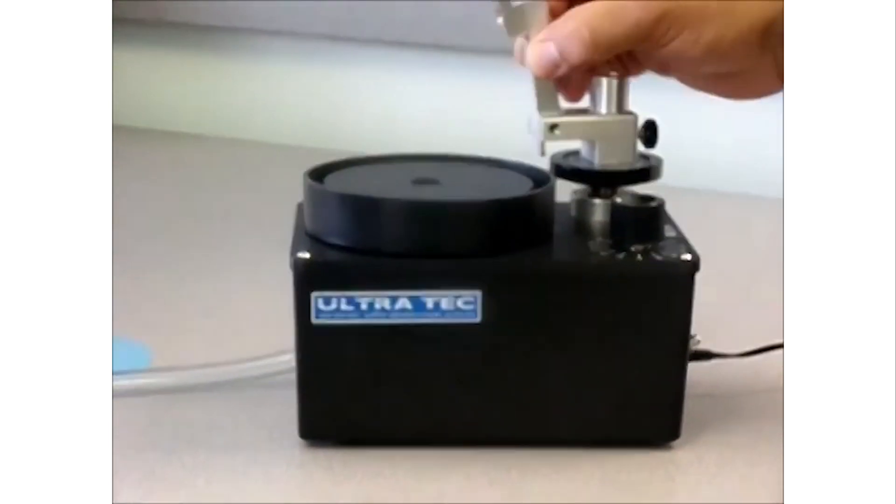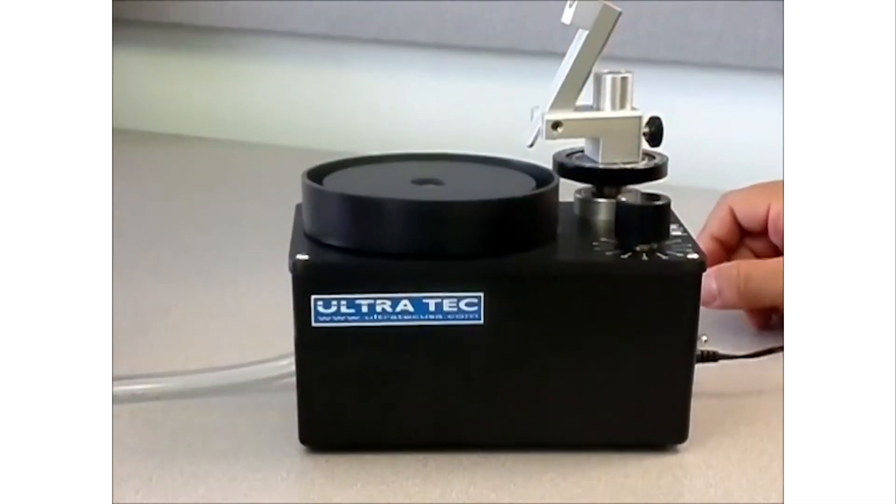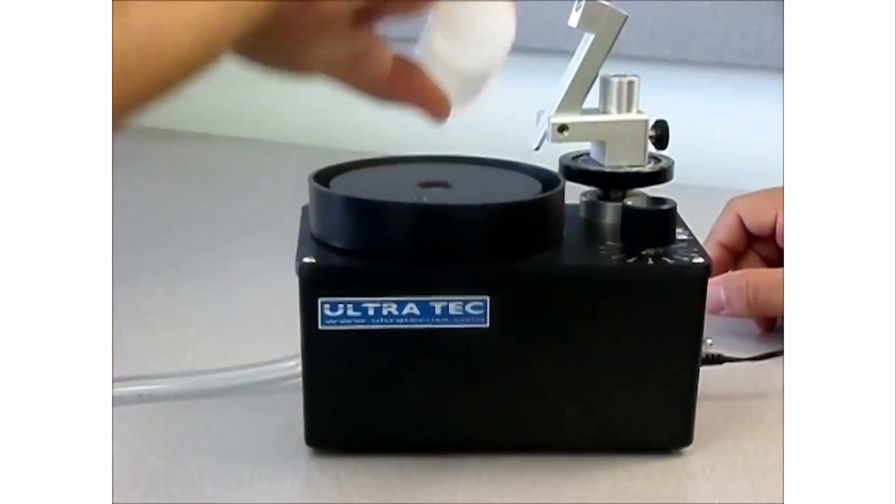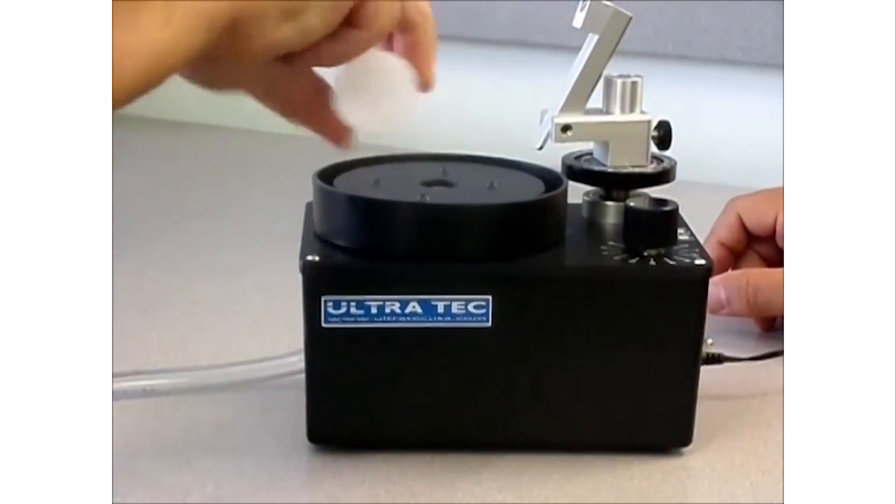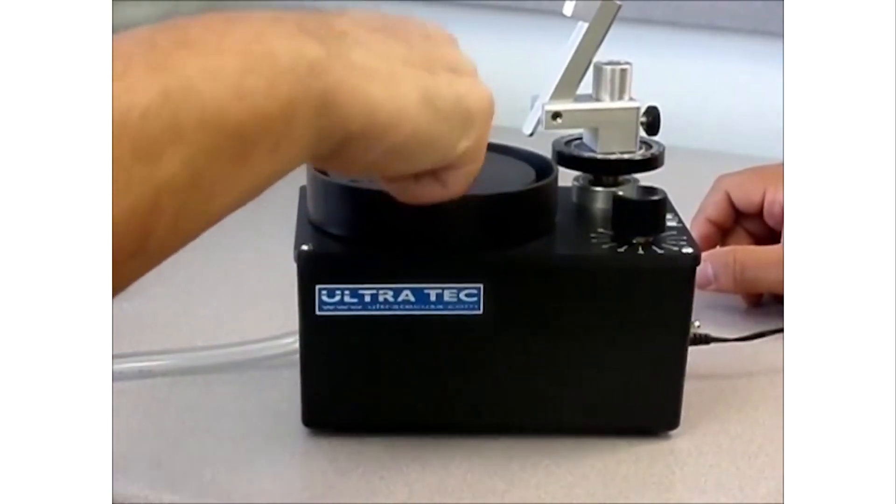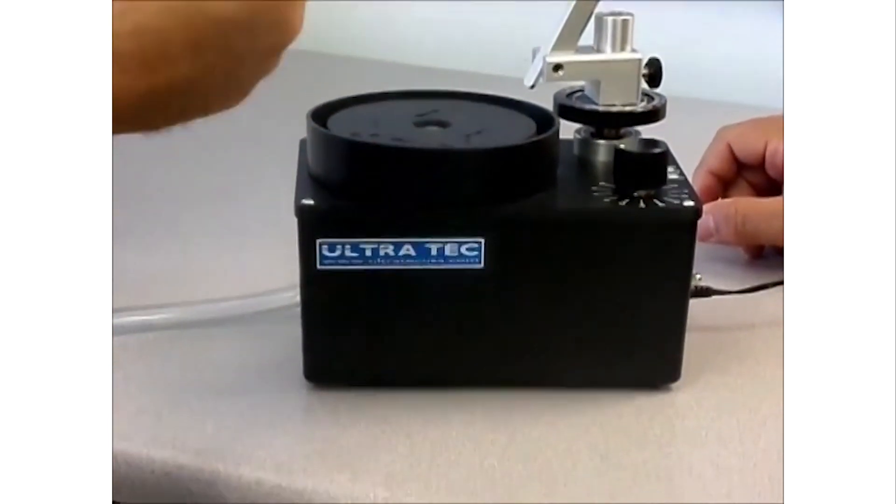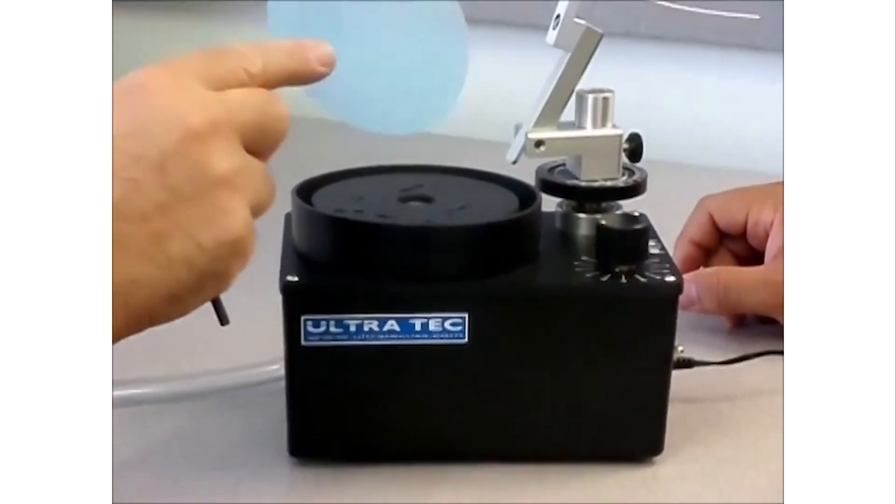To put polishing film on, all you do is you put a drop or two of water onto the Resilient Disc. Place the film on, shiny side down.